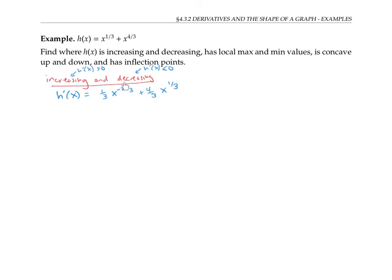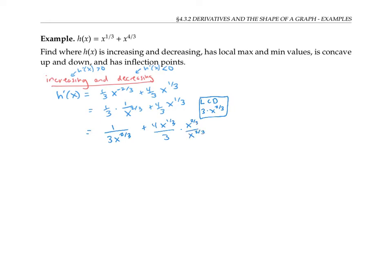Instead of working with negative exponents, I'm going to rewrite this derivative as one third times one over x to the two thirds, plus four thirds times x to the one third. Now I'm going to try to get a common denominator. It looks like three times x to the two thirds can be a common denominator for both terms. The first term is already over the common denominator, and the second term — four times x to the one third over three — I'll multiply by x to the two thirds over x to the two thirds to put it over the common denominator.